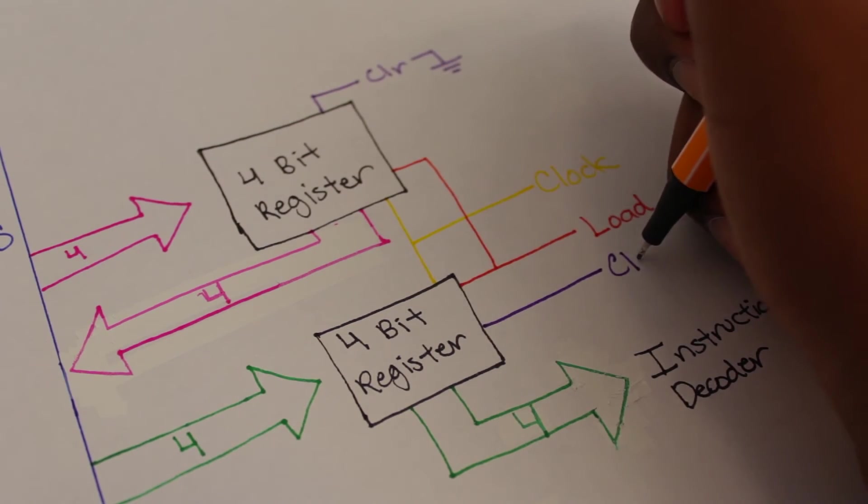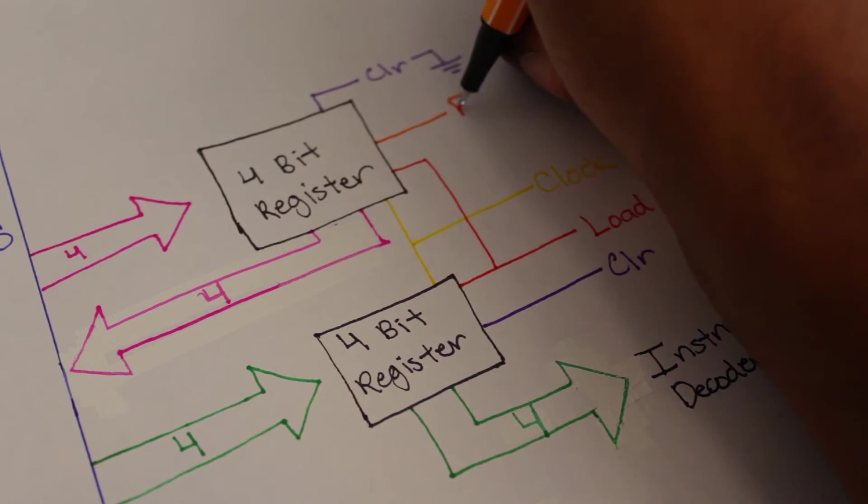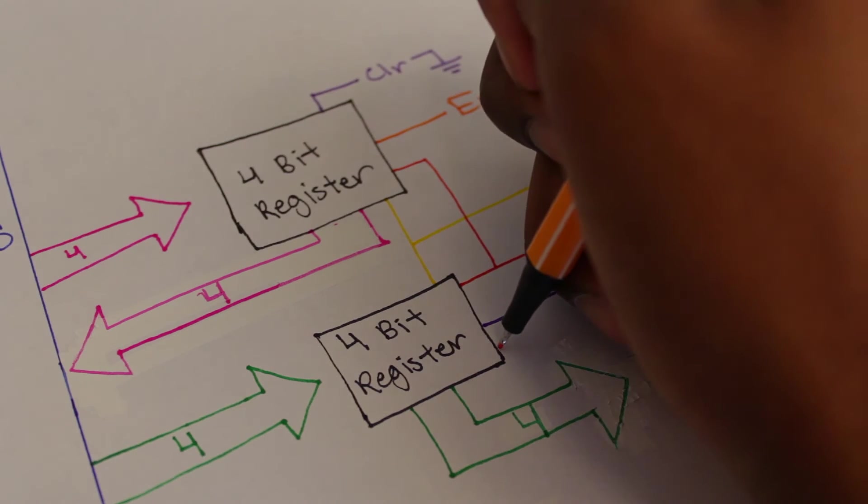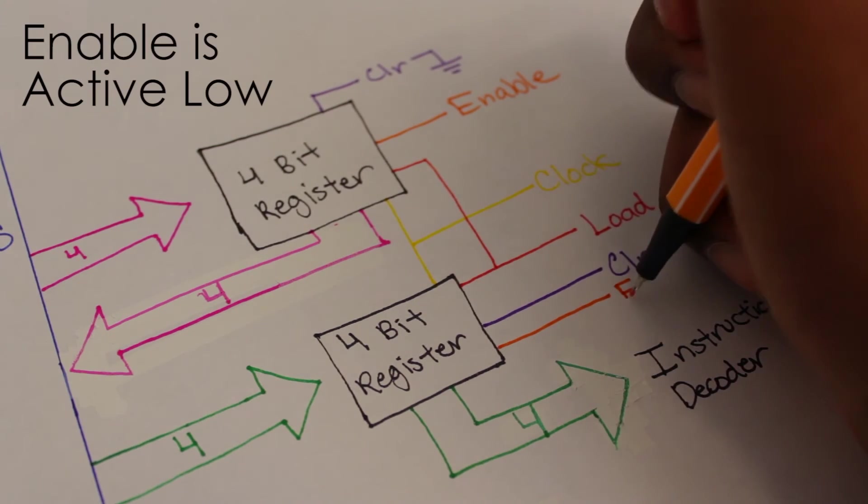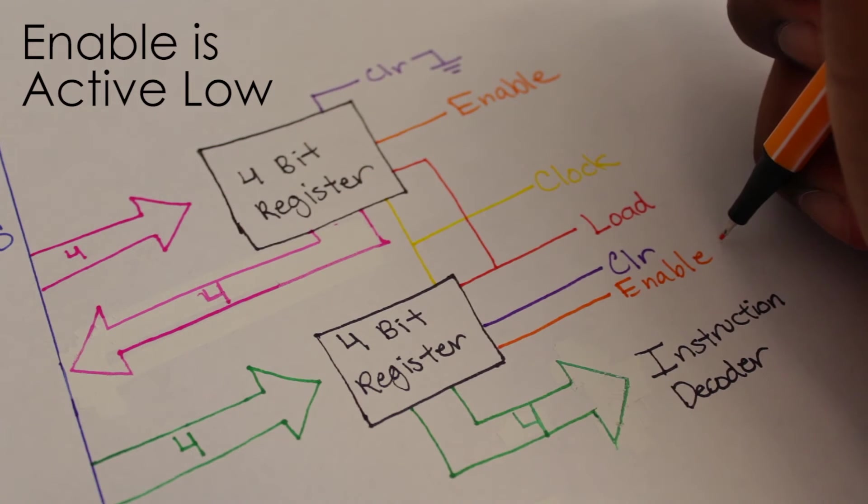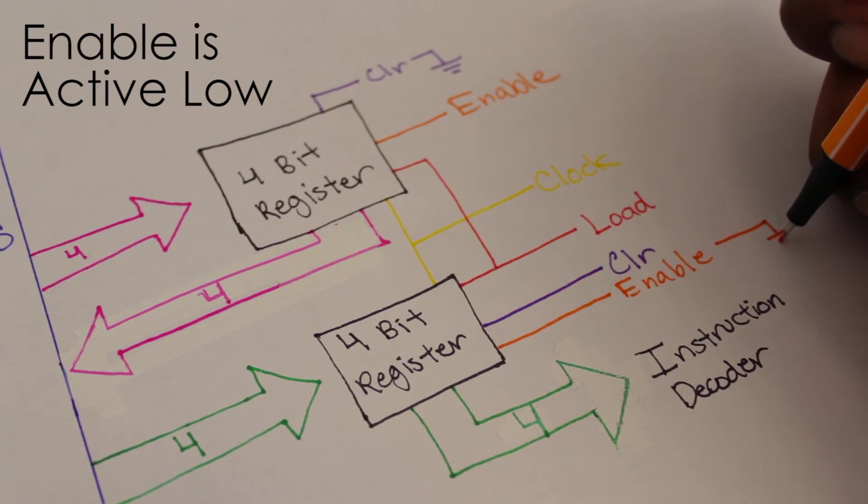As for the other register's clear, it's up to us whether we want to clear it or not. We'll control the enable for the top register, but the bottom register will always output because we can decide in the instruction decoder whether we want to use the instruction. So we can just tie it low so that we have one less line to worry about.